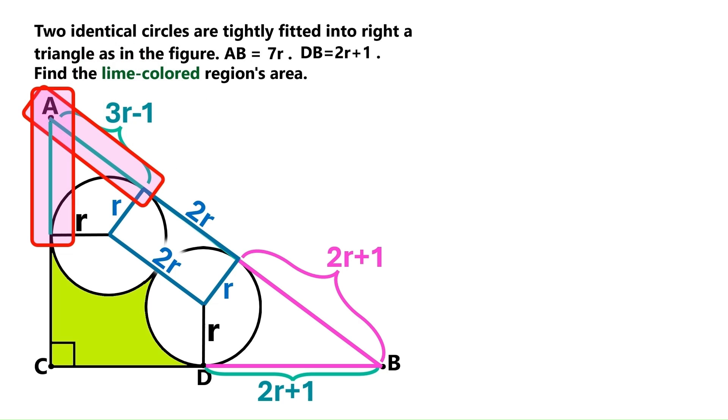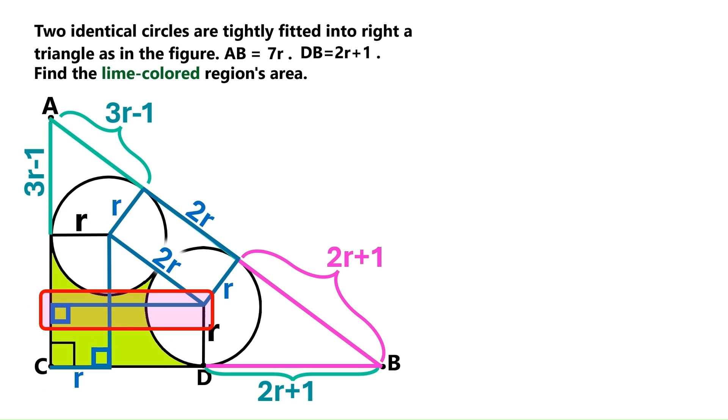These two segments are tangents with a common point of origin, so they are equal, and this segment is also 3r minus 1. Now, let's draw this line that's perpendicular to the triangle's base. Next, we'll take this r and project it to here. Let's draw another perpendicular line here.